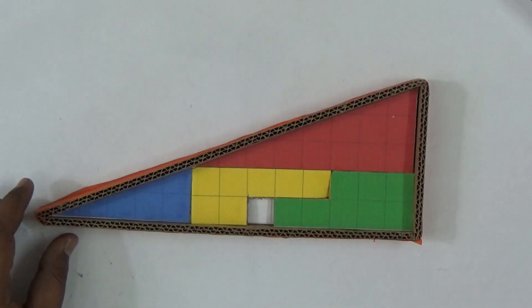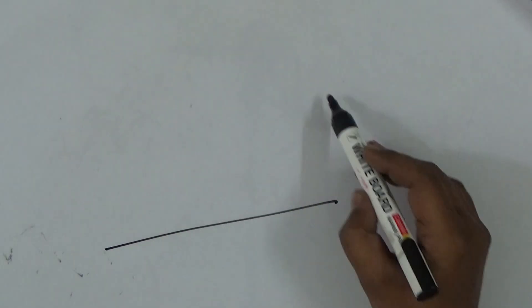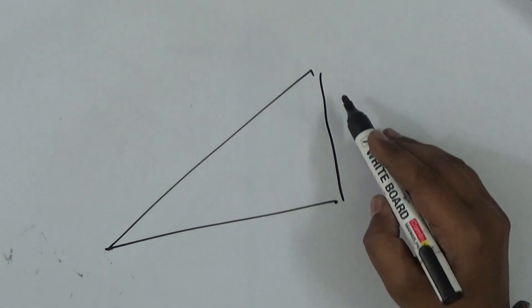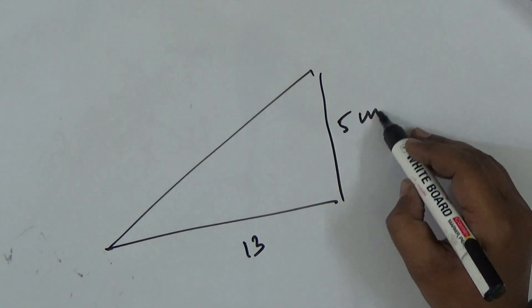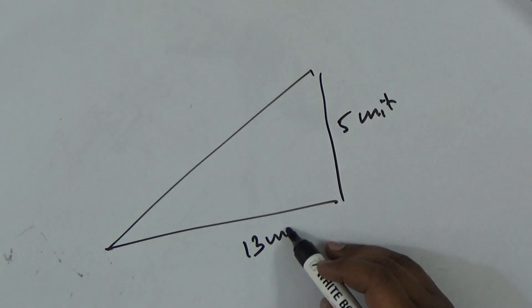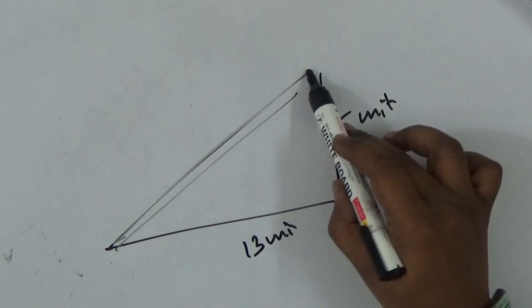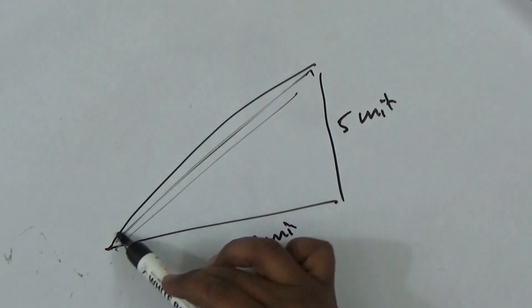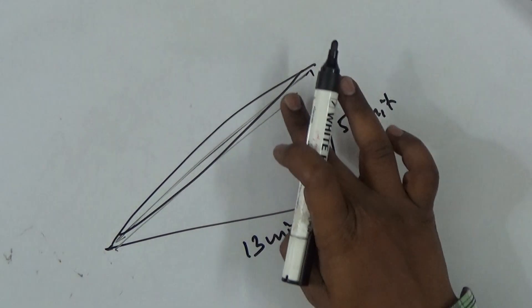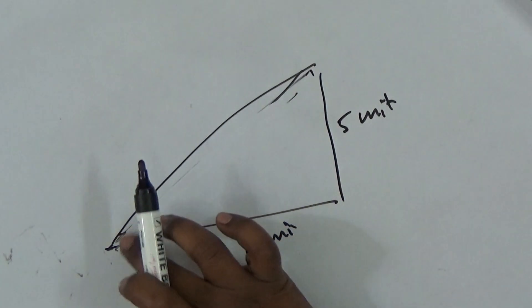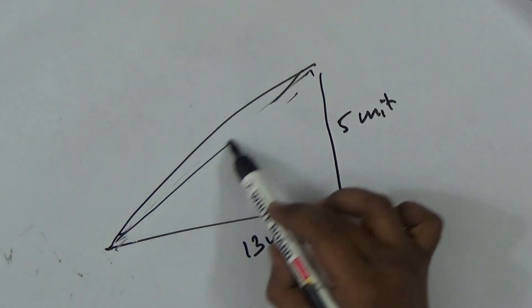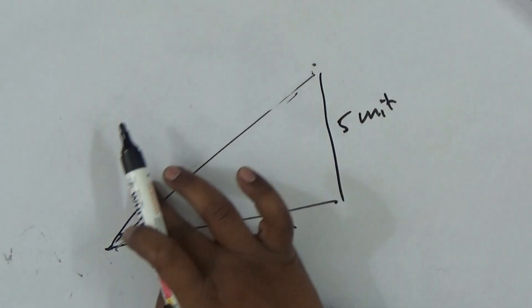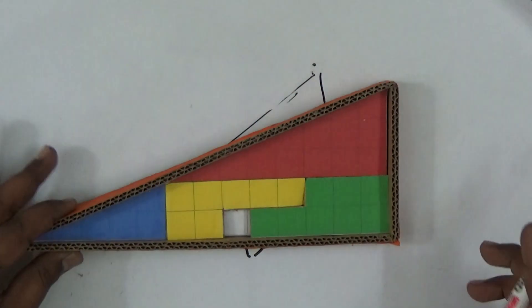Now I will explain the solution. The main concept is that the height remains the same — five units — and the base remains thirteen units. I am not changing anything. Only the hypotenuse shifts slightly — it has a little slant. If the hypotenuse is more slanted, one square will surely be missed; if the hypotenuse is reduced somewhat, the square will be occupied. That is exactly what is happening here.